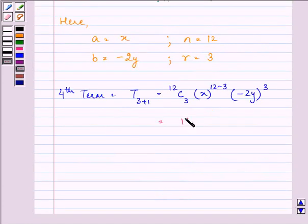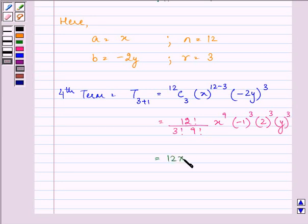We have 12! divided by (3! × 9!), x^9, (-1)^3, 2^3, and y^3. Let us simplify it.